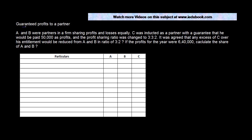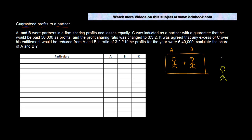Let us see how to do accounting when there are guaranteed profits to a partner. For example, there were two partners A and B running their business well, but they realized they needed a good marketing person as a manager. There was this chap C who was very good at marketing, so they asked C to become a partner. C said he might, but he didn't want to earn below his current amount.